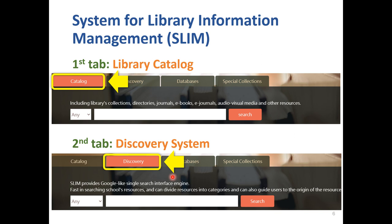To start searching, there are four tabs on the search area. The first tab is Catalog, which includes the Libraries collection, journals, e-books, e-journals, audio, video, and media. The second tab is Discovery System, which provides a Google-like single search engine interface. So what's the difference between them? We will introduce it later.